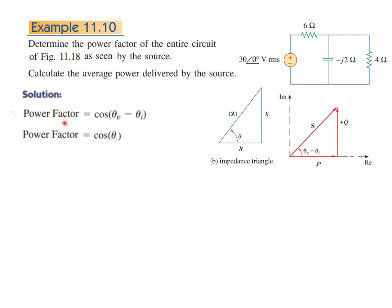So first of all, we know that power factor can be calculated as cosine of this angle. If this is the power triangle, then the angle here is called theta_v minus theta_i. Same triangle, if we refer to it as an impedance triangle, then this angle is called theta, which is actually equal to theta_v minus theta_i. So for power factor, we can use either this formula or this formula.